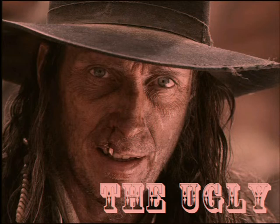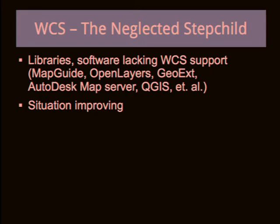Now the ugly — this is primarily a comment on WCS, which is a service for providing raster data. In itself it's fine, it's just that nobody supports it and not many people seem to be using it. We actually wrote WCS support for OpenLayers and GeoExt ourselves. I just learned yesterday that QGIS will be supporting WCS — maybe as of today if they release on schedule. But until recently they didn't support WCS, so if you're building a system that relies on WCS as we did, this is a problem. It will get better over time, but right now there are still many packages that don't support it.